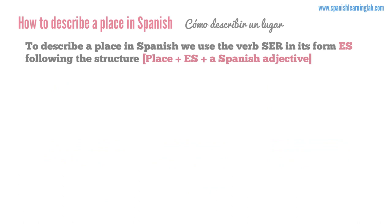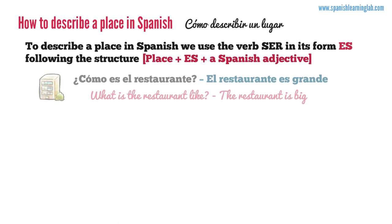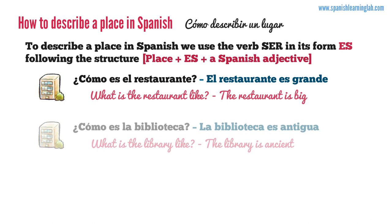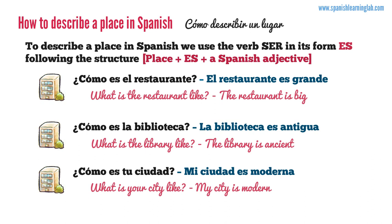How to describe a place in Spanish. To say what a place looks like in Spanish, we use the verb 'ser', mainly in its form 'es'. Notice that we also use 'es' in the question '¿Cómo es?' The answer usually follows a structure: place plus 'es' plus a Spanish adjective. For example: '¿Cómo es el restaurante?' — 'El restaurante es grande.' '¿Cómo es la biblioteca?' — 'La biblioteca es antigua.' '¿Cómo es tu ciudad?' — 'Mi ciudad es moderna.' Grande, antigua, and moderna are Spanish adjectives. To ask what a place is like, we use '¿Cómo es?', then answer with the place first, then 'es', and finally a Spanish adjective — for example, 'El restaurante es grande.'